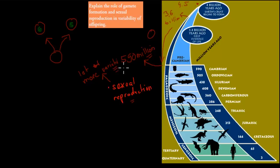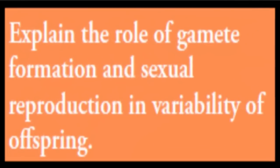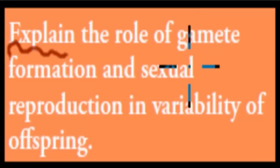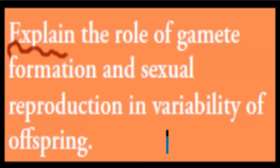The dot point itself says: explain the role of gamete formation and sexual reproduction in variability of offspring. A gamete is just a sperm or an egg cell. So how do the production of sperm and eggs and sexual reproduction lead to that difference in offspring? That's what we're going to talk about in this video.